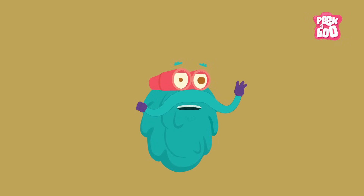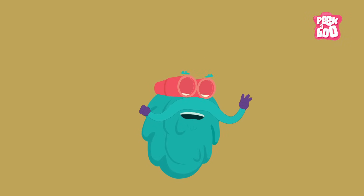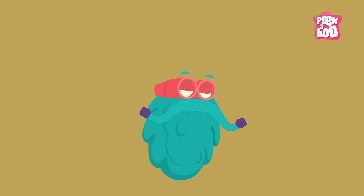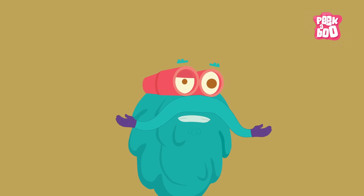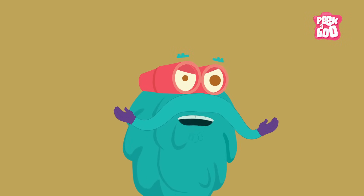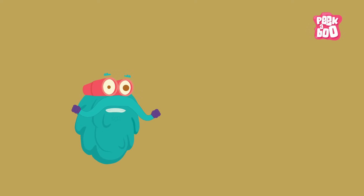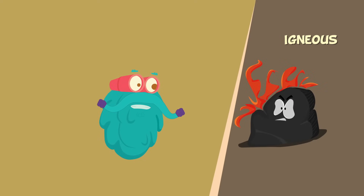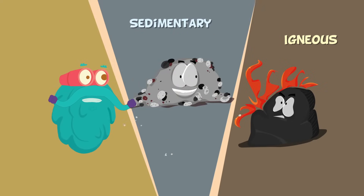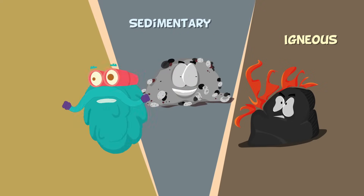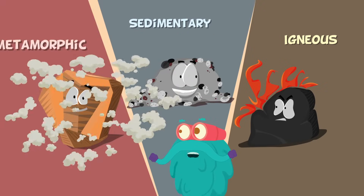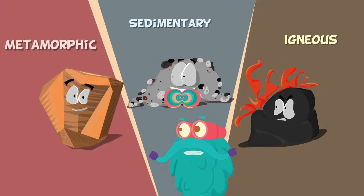There are three major types of rocks based on their formation, and they are Igneous rocks, Sedimentary rocks, and Metamorphic rocks.